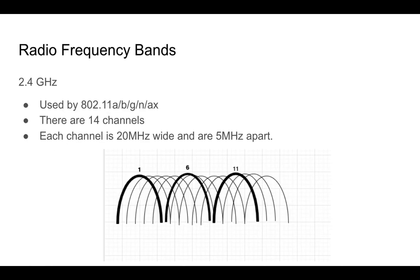Now let's talk about frequency bands. In Wi-Fi, there are two main frequency bands: 2.4 GHz and 5 GHz. The 2.4 GHz band is used by 802.11 a, b, g, n, and ax. In the 2.4 GHz band, there are 14 channels. Each channel is 20 MHz wide and each channel is separated by 5 MHz.